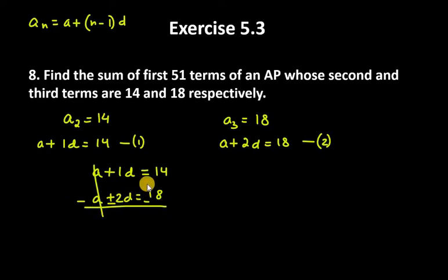You will get A minus A as 0, D minus 2D as minus D, and 14 minus 18 as minus 4. So you get the value of D as minus 4 over minus 1. Cancel it out, you will get D as 4.